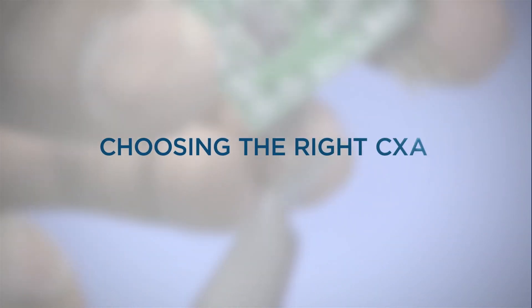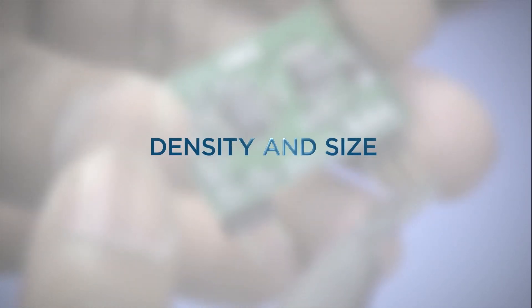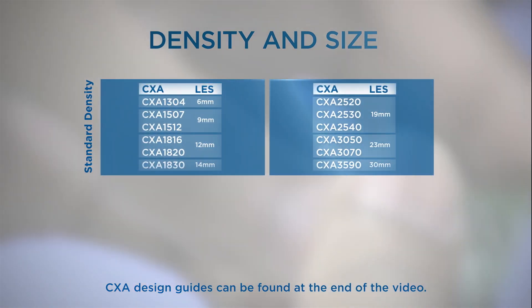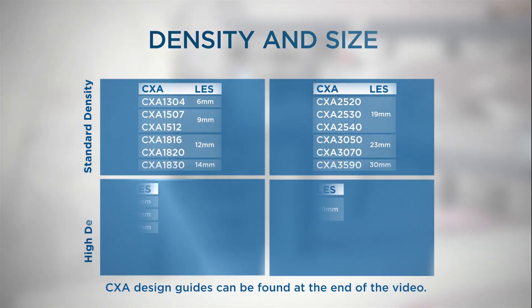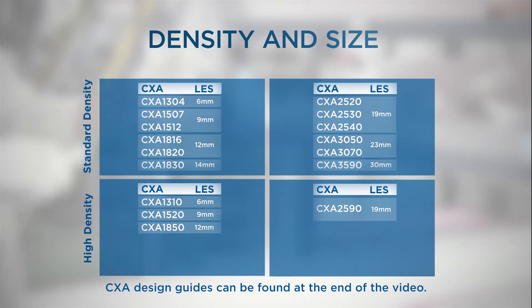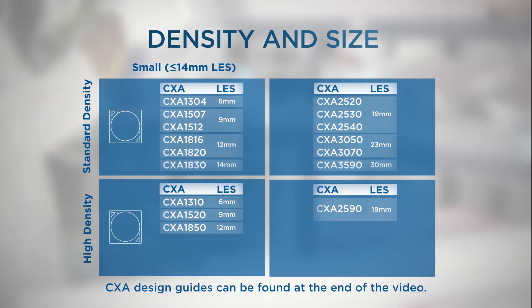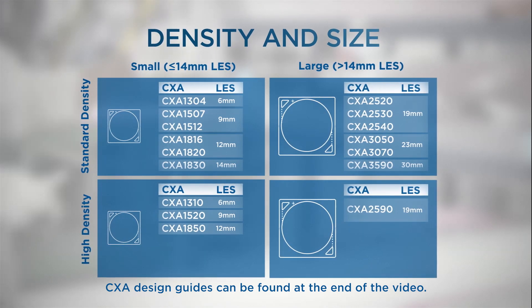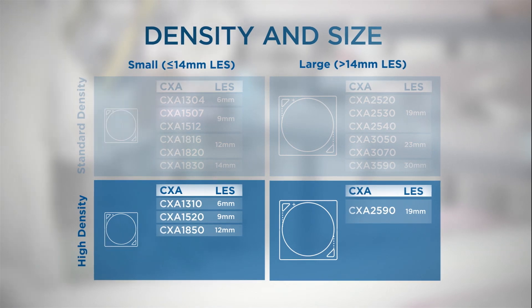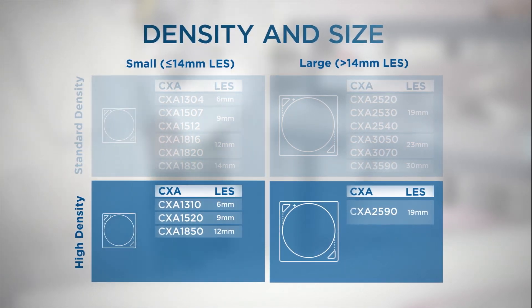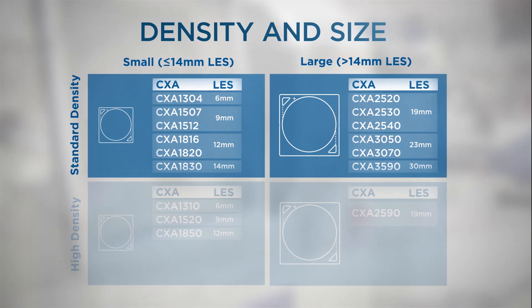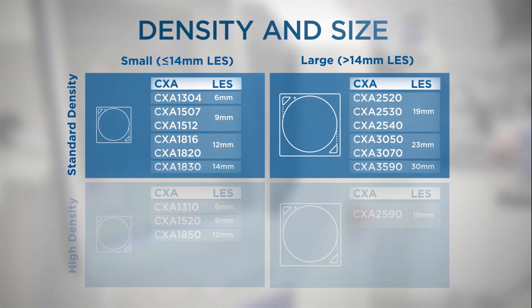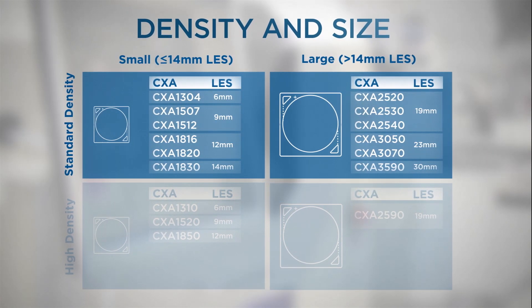When choosing the right CXA for your project, there are two main differentiating factors to think about: density and size. Standard density CXAs optimize lumens per dollar, and high density CXAs optimize center beam candle power per dollar. We offer small arrays with a light emitting surface of 14mm wide or less, and large arrays that are wider than 14mm. High density CXAs are great for high power directional lighting, and standard density CXAs are optimized for cost and performance across all lighting applications.